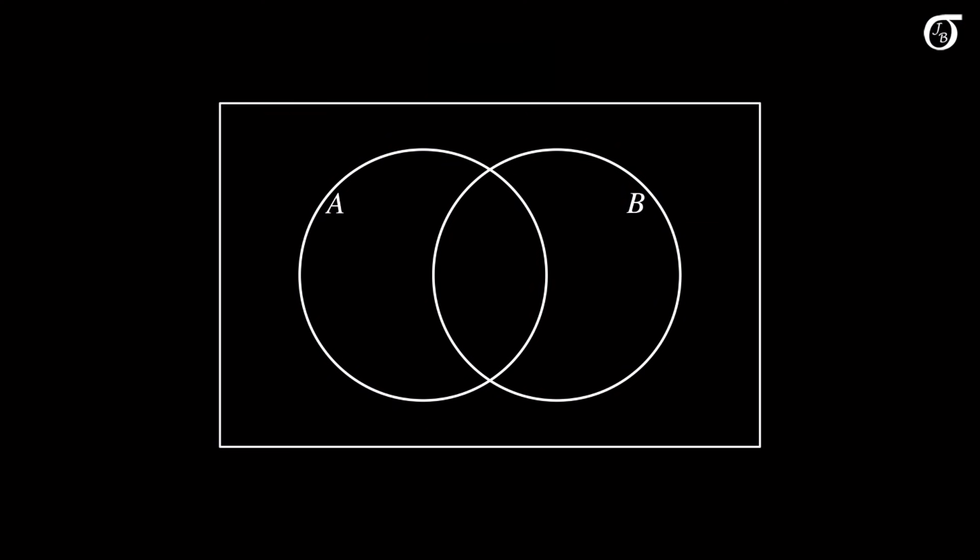Here's a Venn diagram representation. The rectangle represents the sample space, the circle on the left represents event A, and the circle on the right represents event B. The intersection of A and B is the green region, which is in both A and B — it is where both A and B occur.